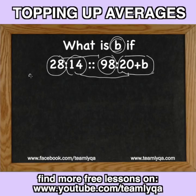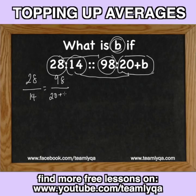28 over 14 is equal to — we match it — 28 corresponds to 98, so that will be 98 all over 20 plus B. After that, we're going to do cross multiplication.